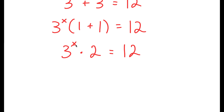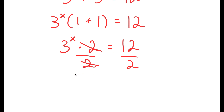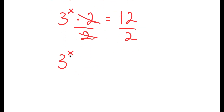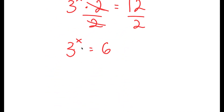From here, we want to isolate x. To do that, we have to get rid of this times 2 by dividing both sides by 2. These two cancel out and I'm left with 3 to the power of x is equal to 12 divided by 2, which is 6. So now I have a much more simplified equation: 3 to the power of x is equal to 6.